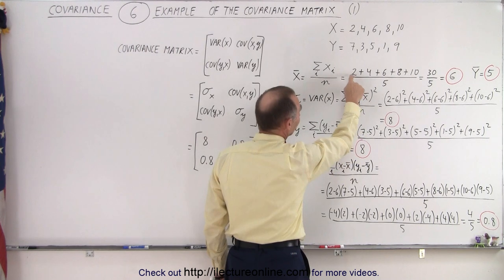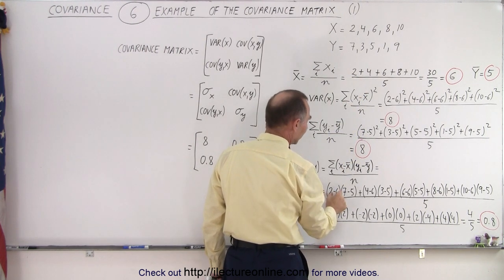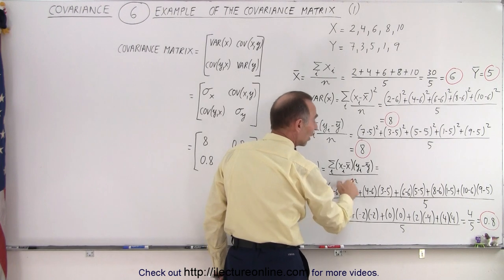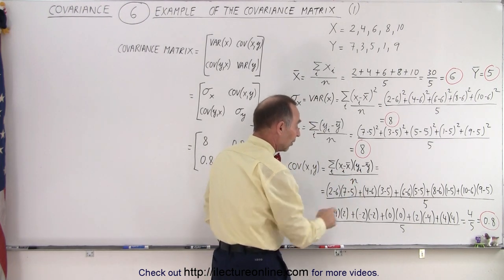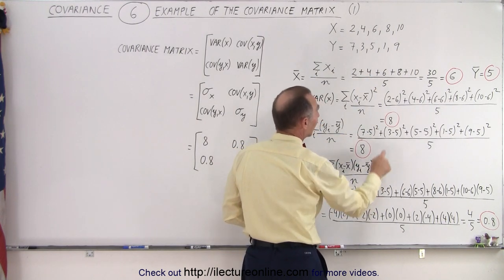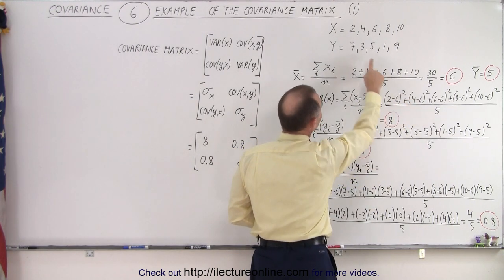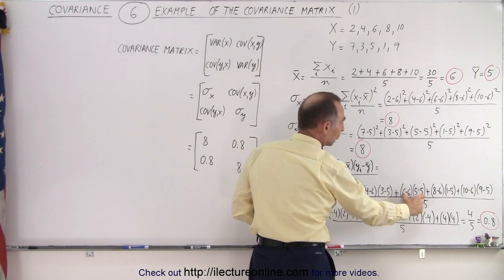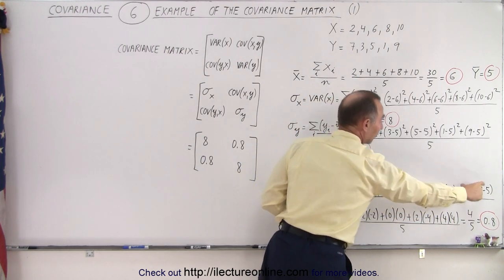So in this case, we take the first number, 2 minus 6, and we multiply that times 7 minus 5. Notice nothing is squared here because we're already multiplying the two together, plus the second number minus the average times the second number in the second data set, 3 minus 5. We multiply those together. We do it for the third number, the fourth number, and the fifth number in the data set.